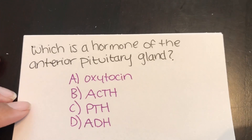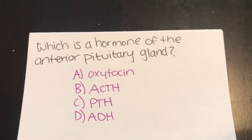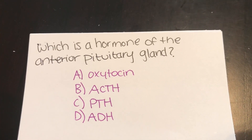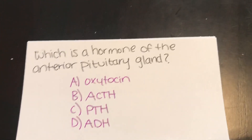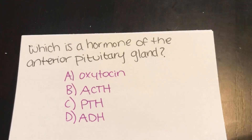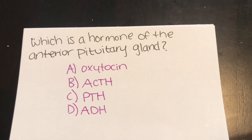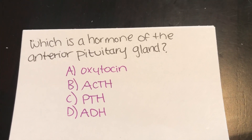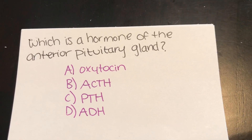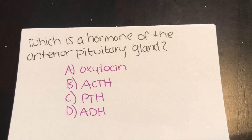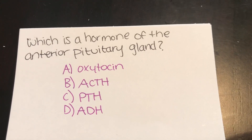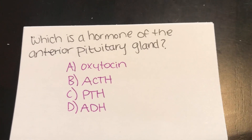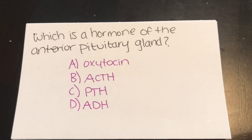Which is a hormone of the anterior pituitary gland? A, oxytocin. B, ACTH. C, PTH. Or D, ADH.